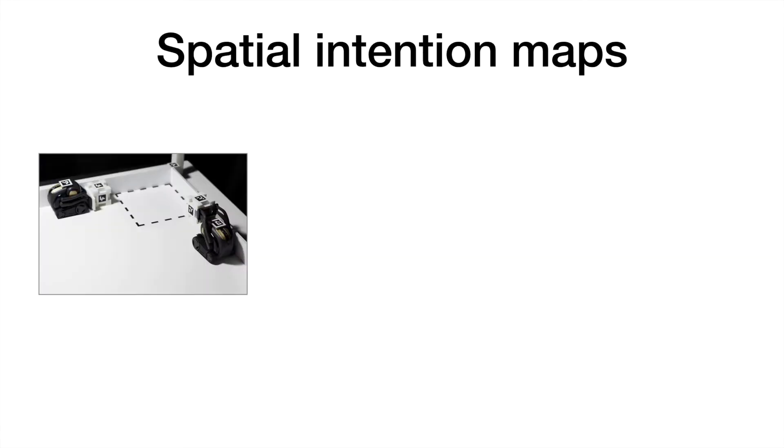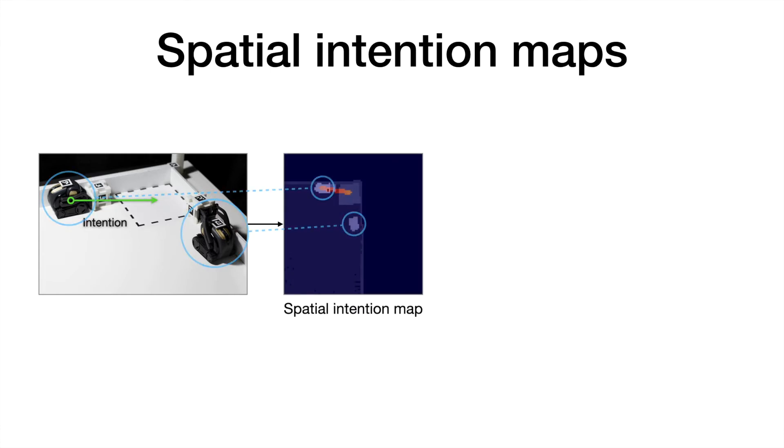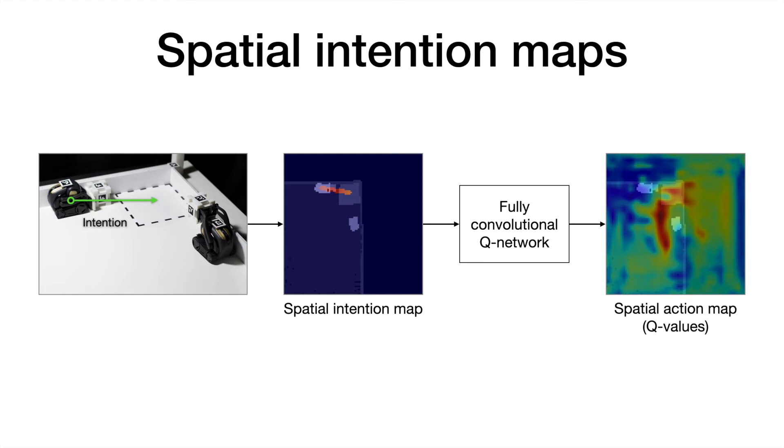The solution we propose is spatial intention maps, a new intention representation for vision-based multi-agent deep reinforcement learning. The main idea is to spatially encode the intentions of other agents into a 2D map that is aligned with the visual observations. The intention map is fed into a fully convolutional Q network, which predicts Q values for a dense set of spatial actions. The agent then executes the action with the highest Q value.